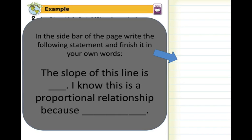Now in the sidebar of your page, I want you to go ahead and write the following. The slope of this line is blank. I know this is a proportional relationship because. So finish that statement based on example number 2. Write your answer in the sidebar. Hit pause.